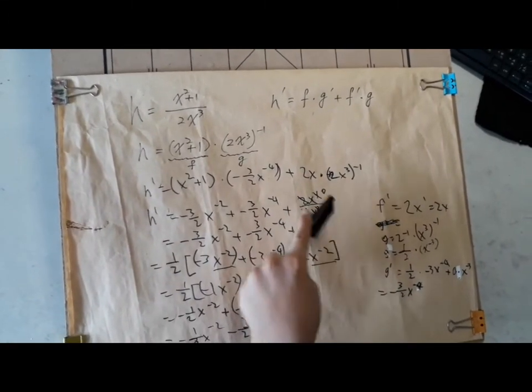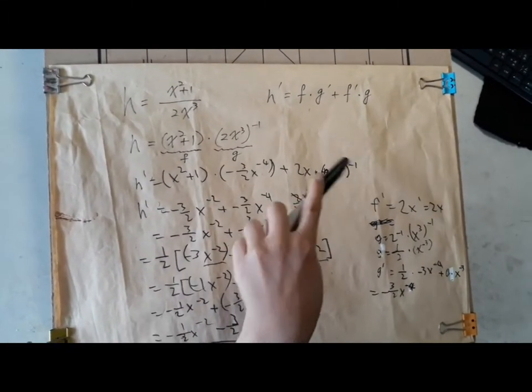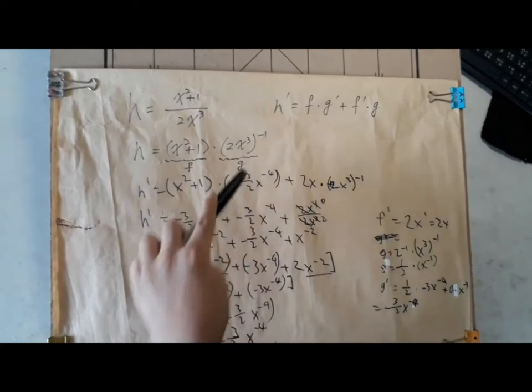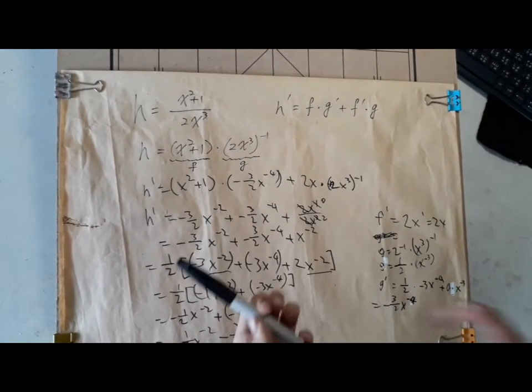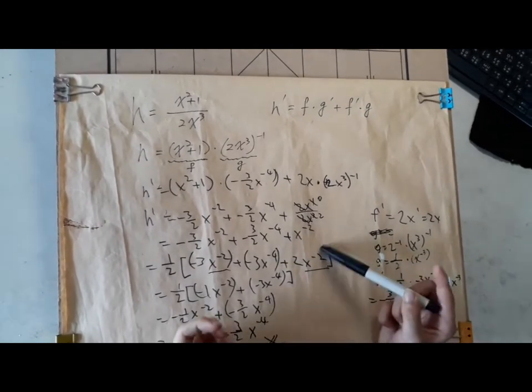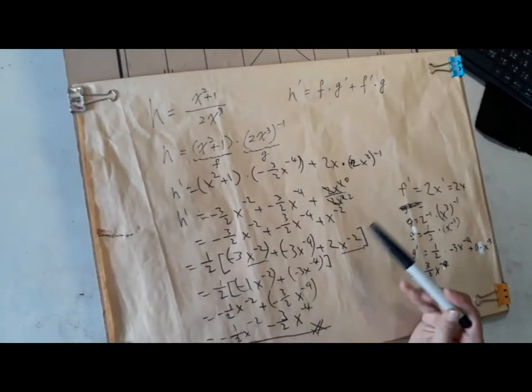And now we can sort of simplify things as shown here. So now, what we're left with is 1 over x squared, or x to the power negative 2.